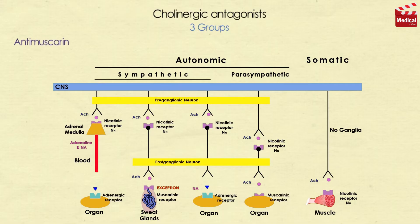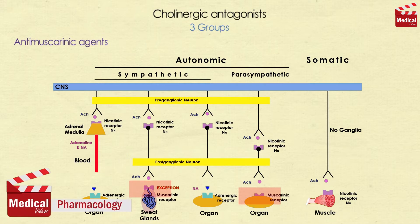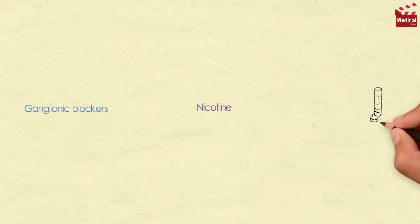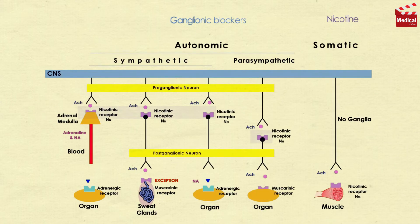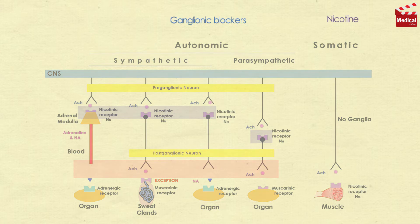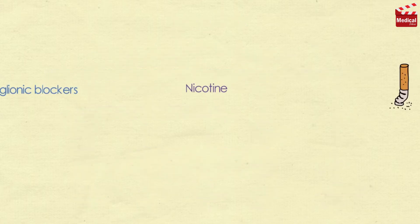In the previous lecture we said that cholinergic antagonists are divided into three groups: the anti-muscarinic group, which we already discussed, and the other two groups are the ganglionic blockers and the neuromuscular blockers. Today we'll talk about the ganglionic blockers. Ganglionic blockers act on the nicotinic receptors of both parasympathetic and sympathetic autonomic ganglia, thus these drugs block the entire output of the autonomic nervous system at the nicotinic receptor. Therefore ganglionic blockade is rarely used therapeutically but often serves as a tool in experimental pharmacology.